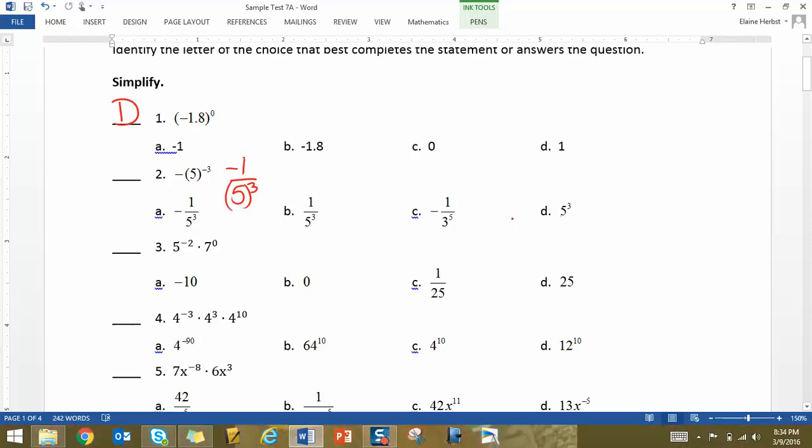But if you look through the answers, you can see that that option is not available. So for letter A, the answer is negative 1 over 5 to the 3rd.